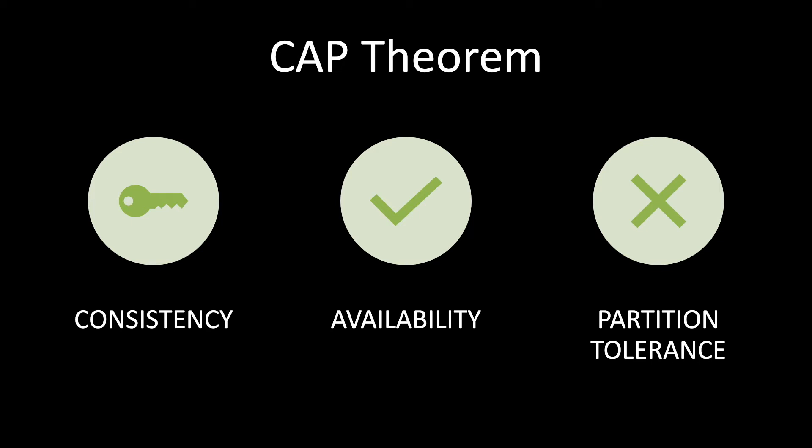Third is Partition Tolerance. In a distributed system, we continue to operate even when some of the machines go down, or some messages get dropped, or there is a network breakdown. A system continues to work even though certain nodes have gone down.